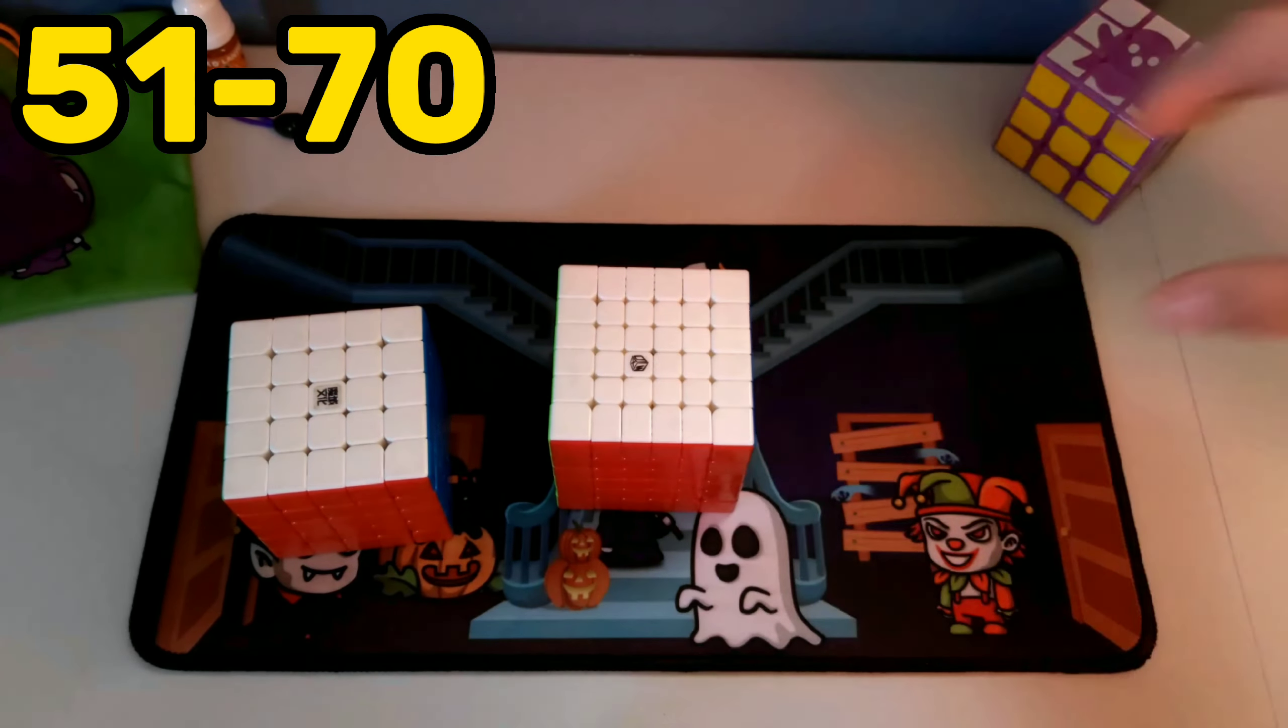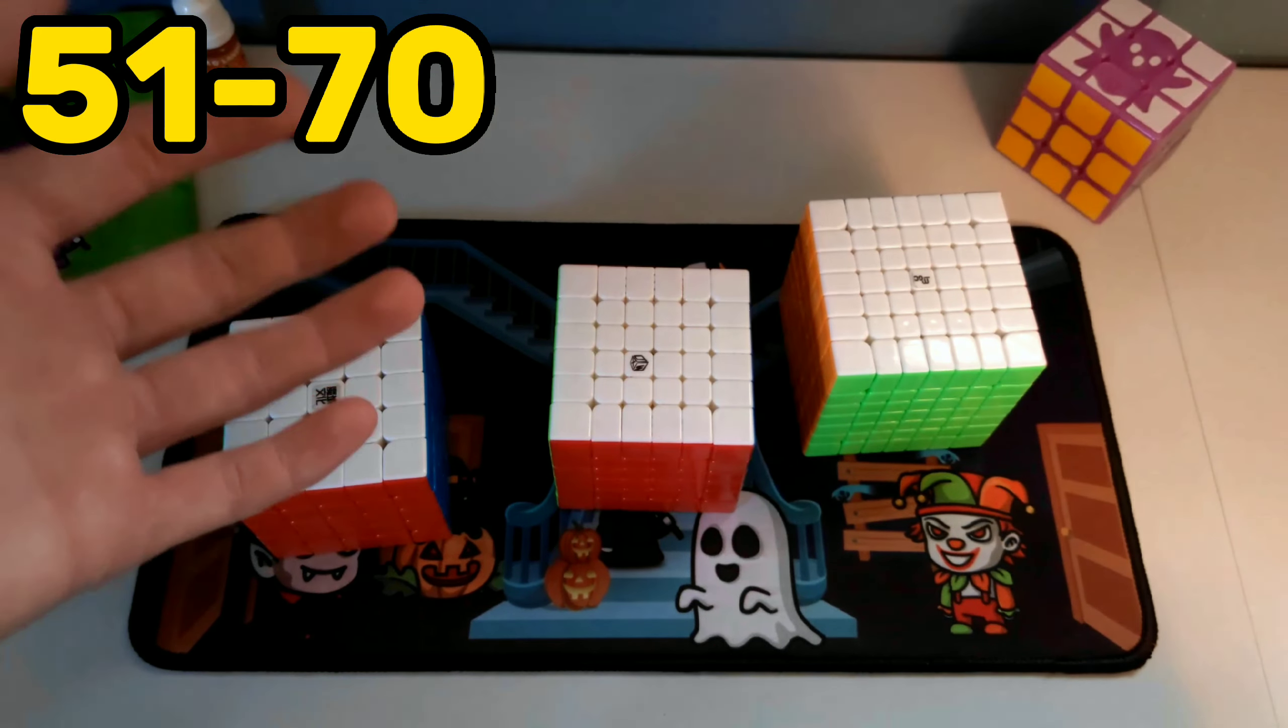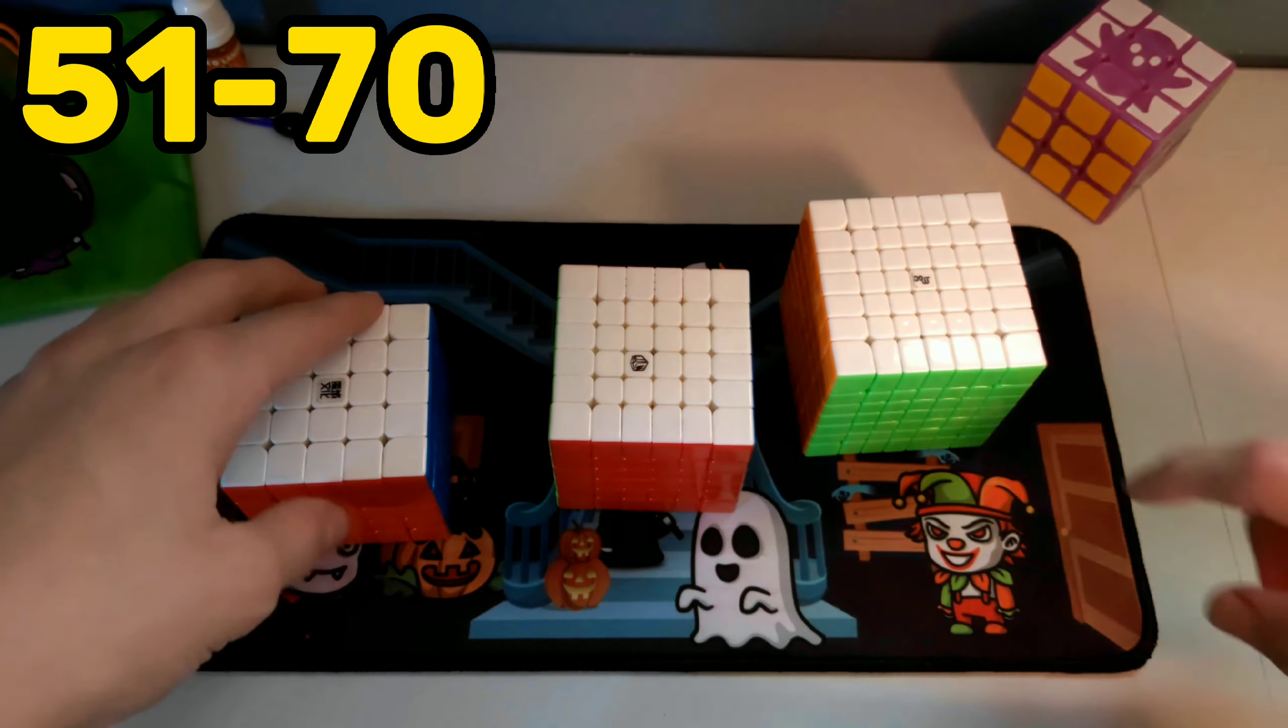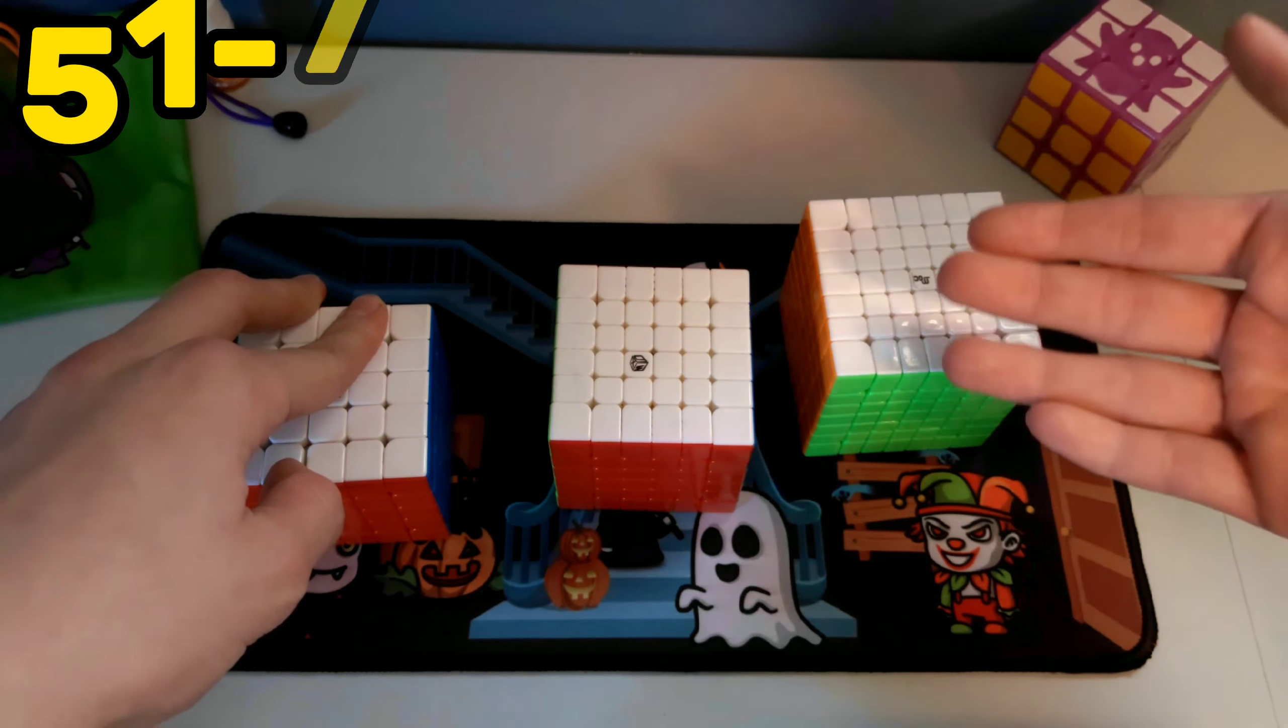The 5x5, the 6x6, and the 7x7 are solved the same as the 4x4. But the only difference is that they have a lot more pieces, and it sometimes can be very frustrating to find the piece you want.